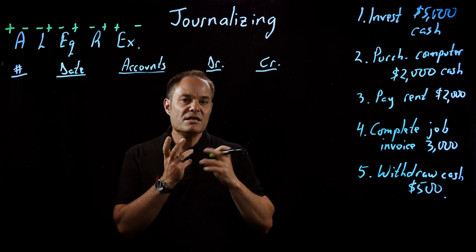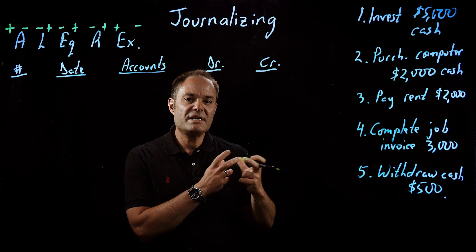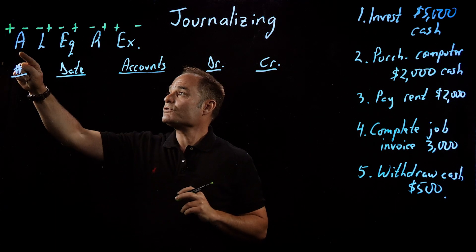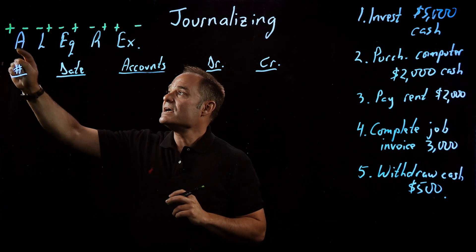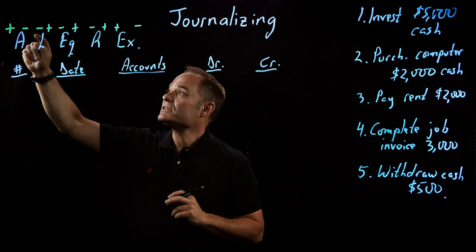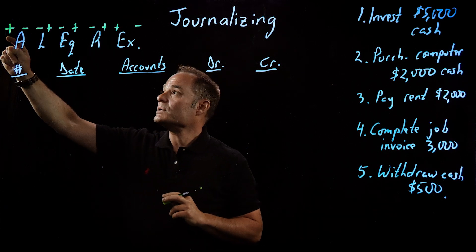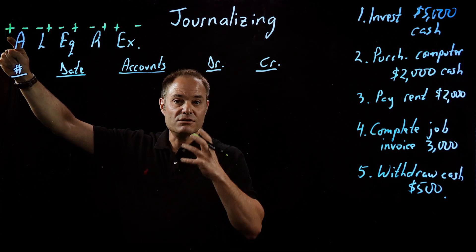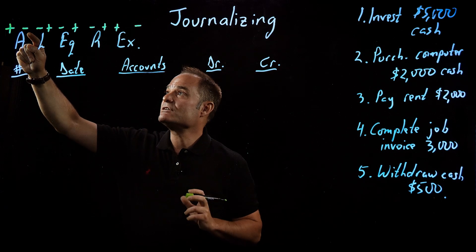This helps me to recall whether I need to use a debit or a credit for various accounts. For instance, for assets, the left side, remember, is the debit side. The right side is the credit side, so a debit to an asset will increase the account and a credit will decrease the account.